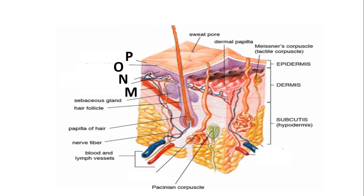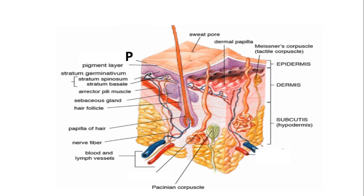L is the sebaceous gland, which is exocrine in nature — these glands are involved in the production of hormones. M is the arrector pili muscle. N is the stratum granulosum, which branches into the stratum spinosum and stratum basale. O is the pigment layer, and P is the stratum corneum.